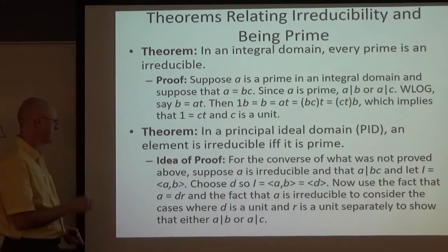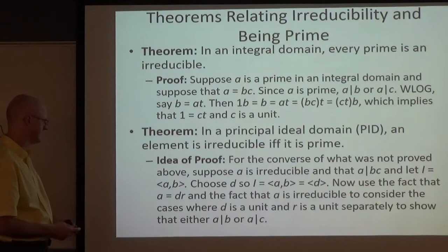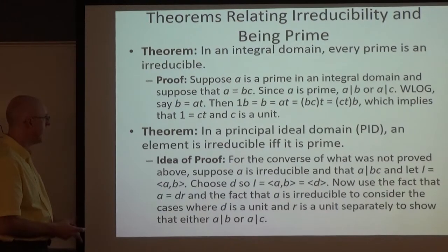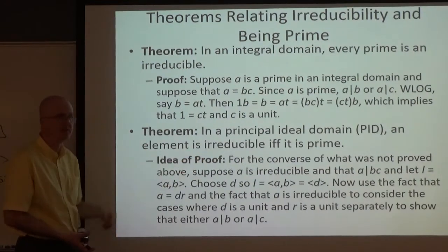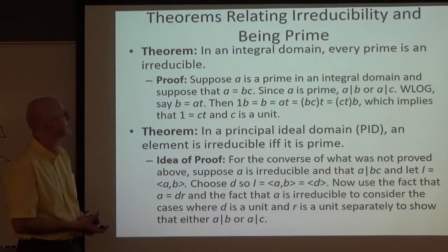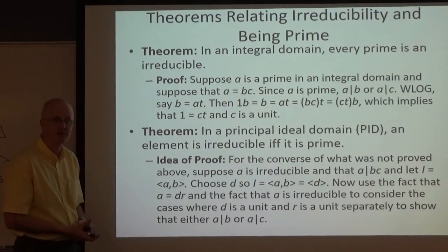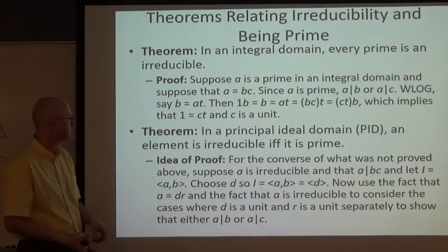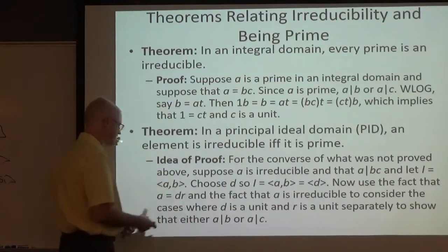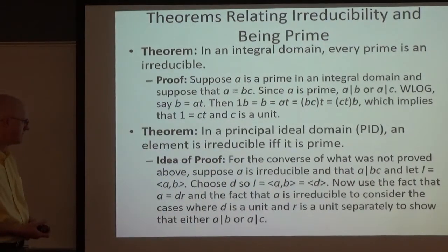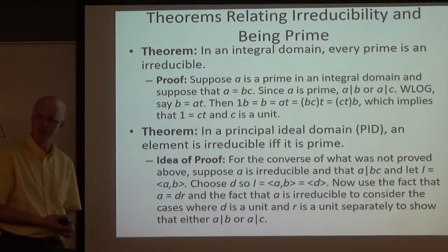The proof that irreducible implies prime in a PID is harder. One direction has already been proved. What remains is the converse: if it's irreducible then it's prime. You'd have to assume A divides BC and show either A divides B or A divides C — it's a bit of a tricky proof. If it's on the exam, it might be more likely to be a fill-in-the-blank proof.